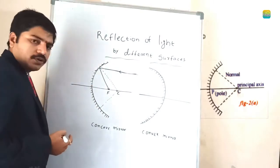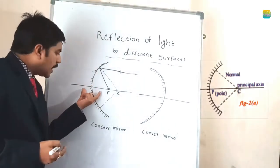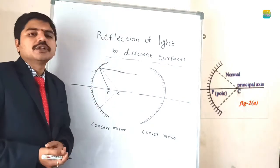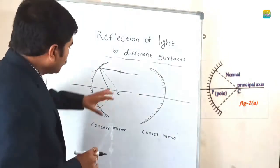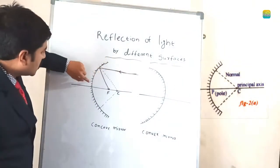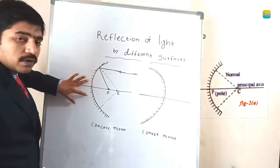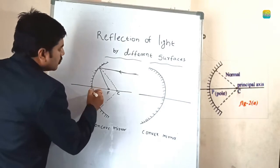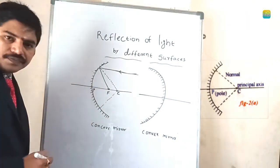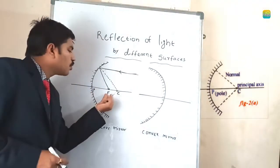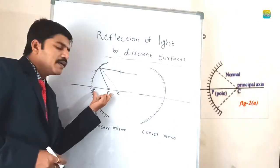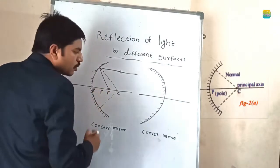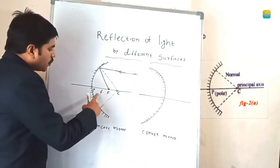Where the principal axis divides the mirror into two equal parts of the curvature, that point is said to be the pole. The distance between the pole and the focal point is said to be the focal length.